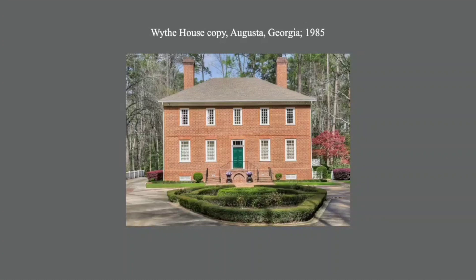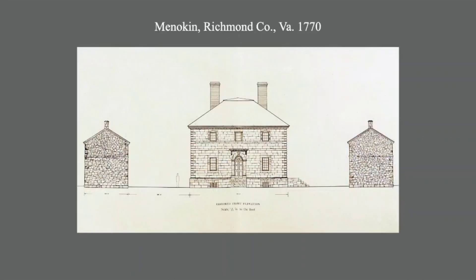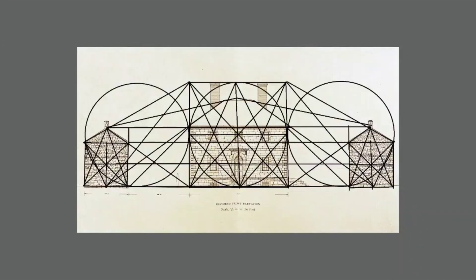Using a measured elevation for a reasonably high-styled house, it's possible to undertake your own analysis of a facade's geometry. I tried this for Minokin, which at first glance appears to be an unassuming 1770s plantation house with flanking dependencies. In fact, I got carried away with the process. I certainly can't say that the builder went this far in working out the design, but the diagram shows that the geometry is there.